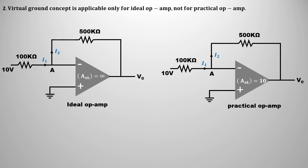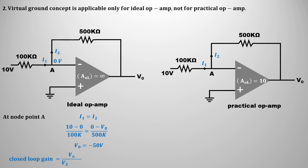First, let's calculate the output voltage for the ideal operational amplifier. The voltage at node point A from the virtual ground concept will be zero, and by node analysis, current I1 equals current I2. Current I1 equals (10 - 0) / 100k and I2 equals (0 - V0) / 500k. Solving this gives an output voltage of -50V and a closed-loop gain of 5.